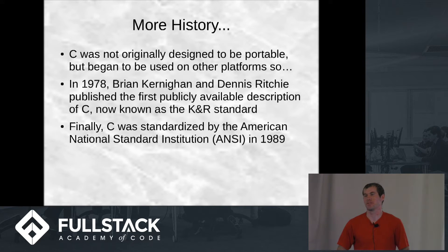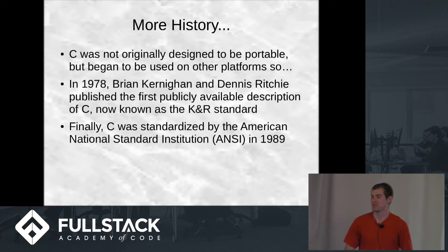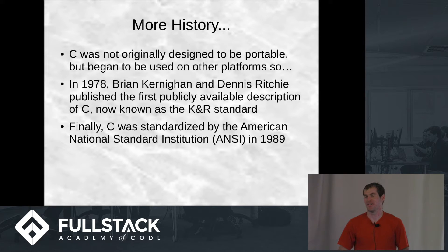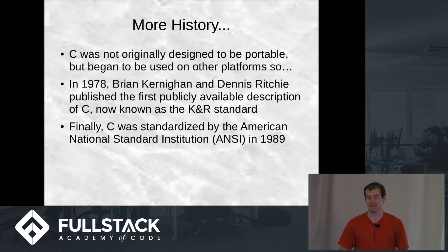It wasn't really designed to be used in its modern way — writing all kinds of new software. It was just for Unix. But all the same, it started being used for other platforms. So in 1978, Brian Kernighan and Dennis Ritchie published the first publicly available description of the C language, now known as K&R, which was used for a long time as the standard for C.